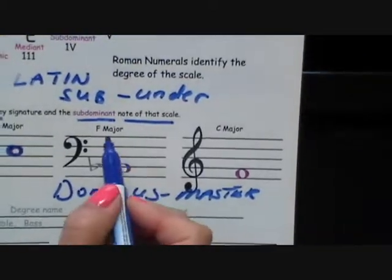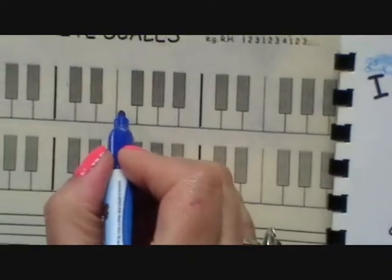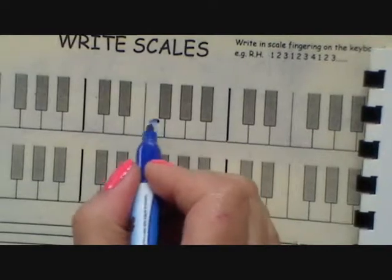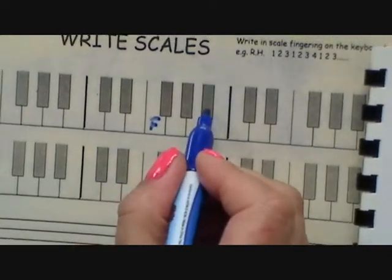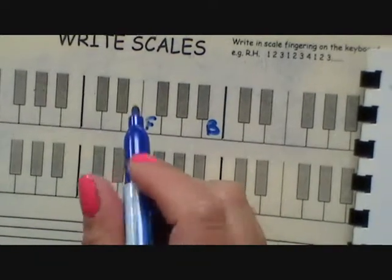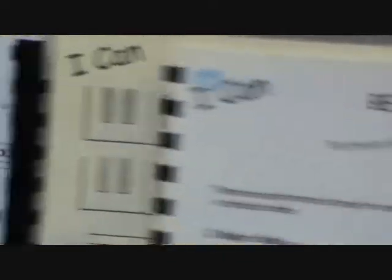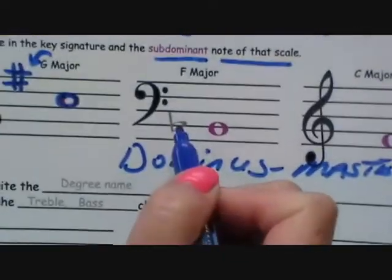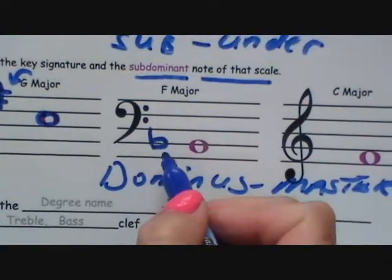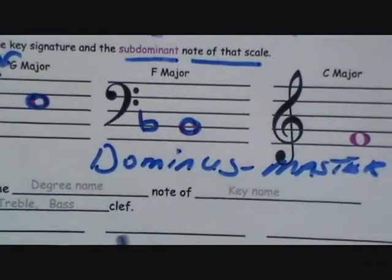Here's another one drawn in for you: F major. The subdominant note of F major. This is the tonic, that would be note 1. Count: 1, 2, 3, 4 — B is the 4th. But F major has a B flat in the key signature, so it will be B flat. When you write, if they're asking for a key signature, you'll put in the flat. That's the subdominant note of F major.